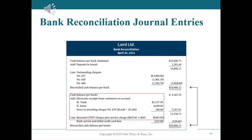Bank reconciliation journal entries. The bank reconciliation is only the first step in the reconciliation process. The reconciliation is not complete until the company's books are adjusted to agree with the correct cash balance. The company must record each reconciling item related to the cash balance per books. If these items are not journalized and posted, the cash account will not show the correct balance.